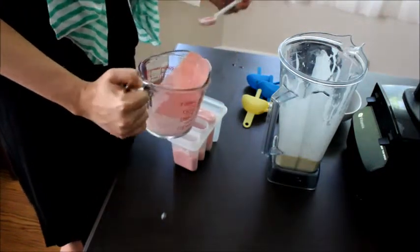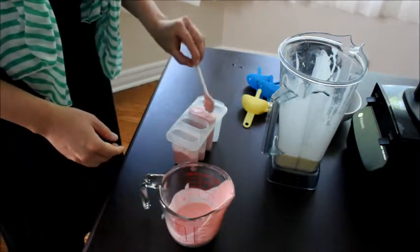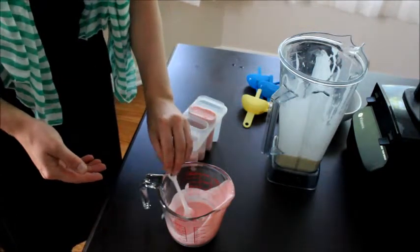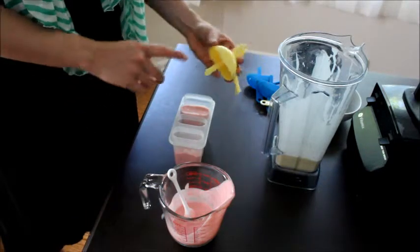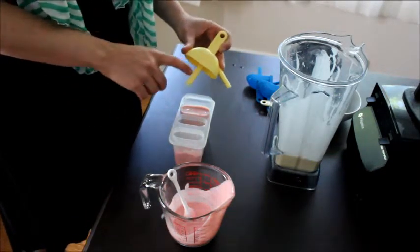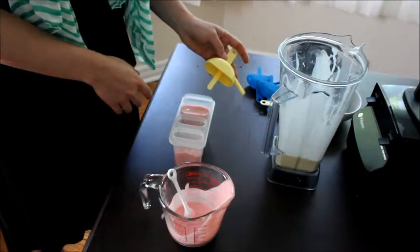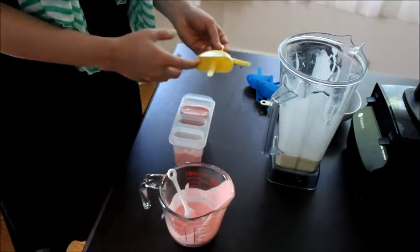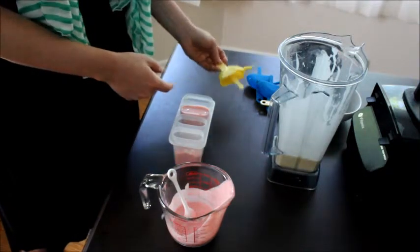Now I know for these popsicle molds you want to fill them to about a third to a half of an inch from the top because when you put in the popsicle mold, this tiny little bit of space is going to cause it to rise. You can definitely fill it pretty close to the top. It doesn't need to be like halfway down or anything because whatever starts to come up, it's just going to fit into this bottom part of the mold.